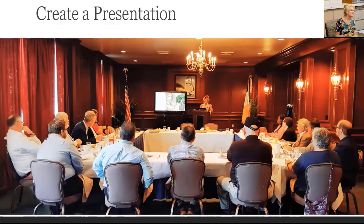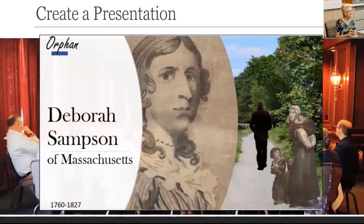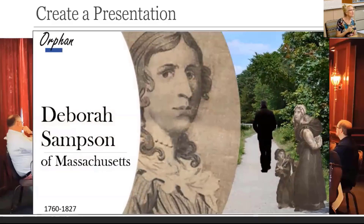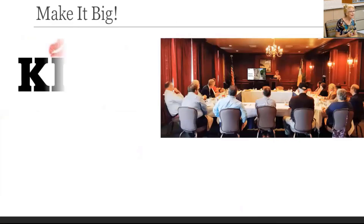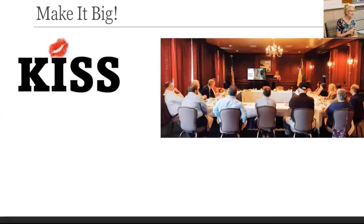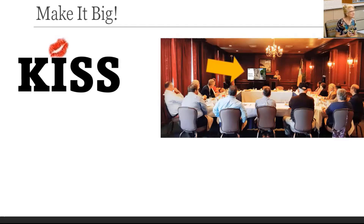What do you think is the first secret to making a successful presentation? Make it big — both the image and the text — because you don't know how big the room is. To make it big, you also need to keep it simple. Visualize this screen. Can the people in the back see it? Fill the screen with the image.